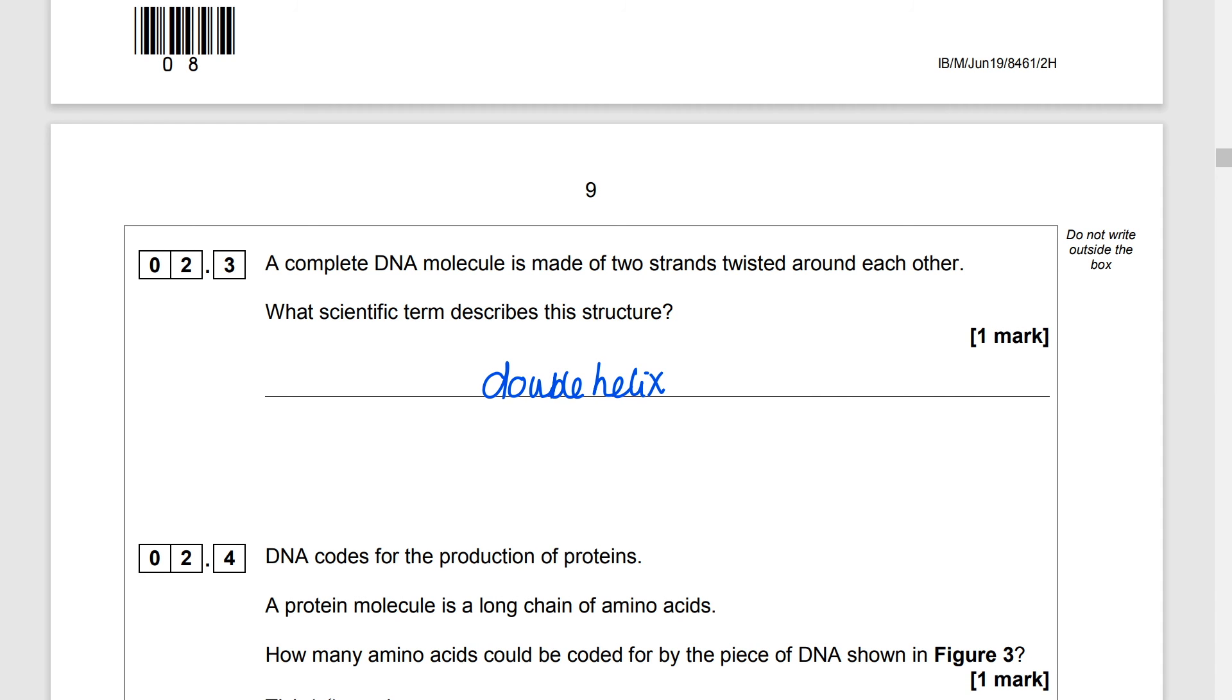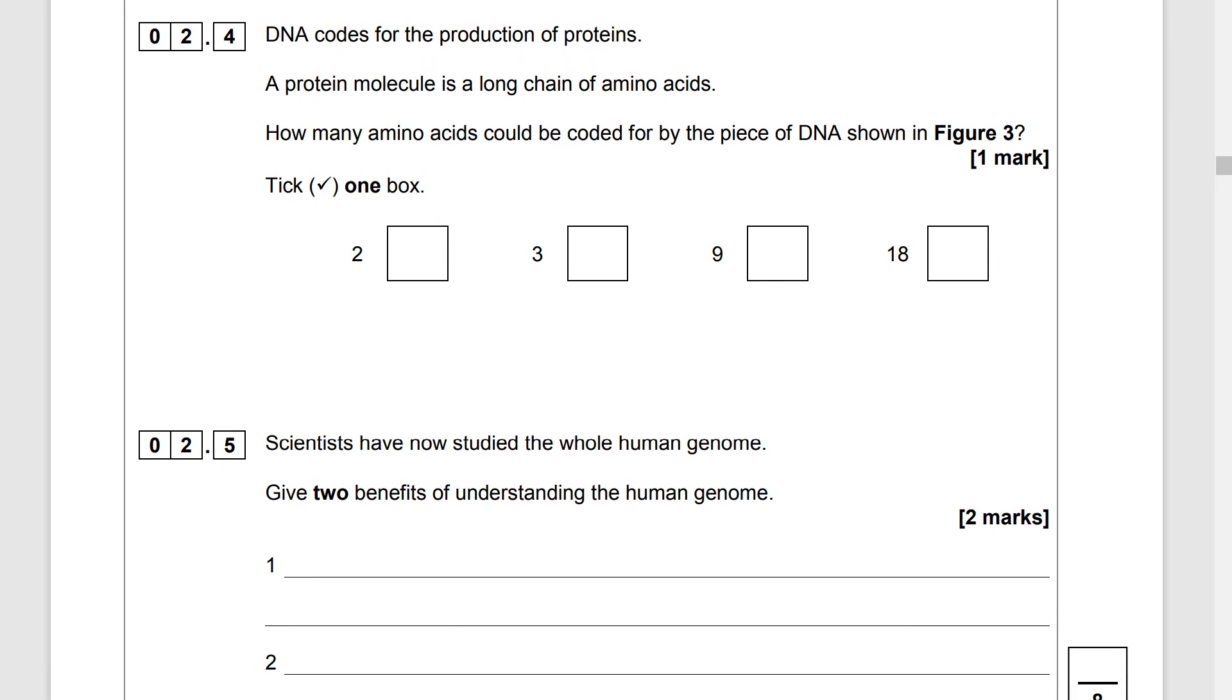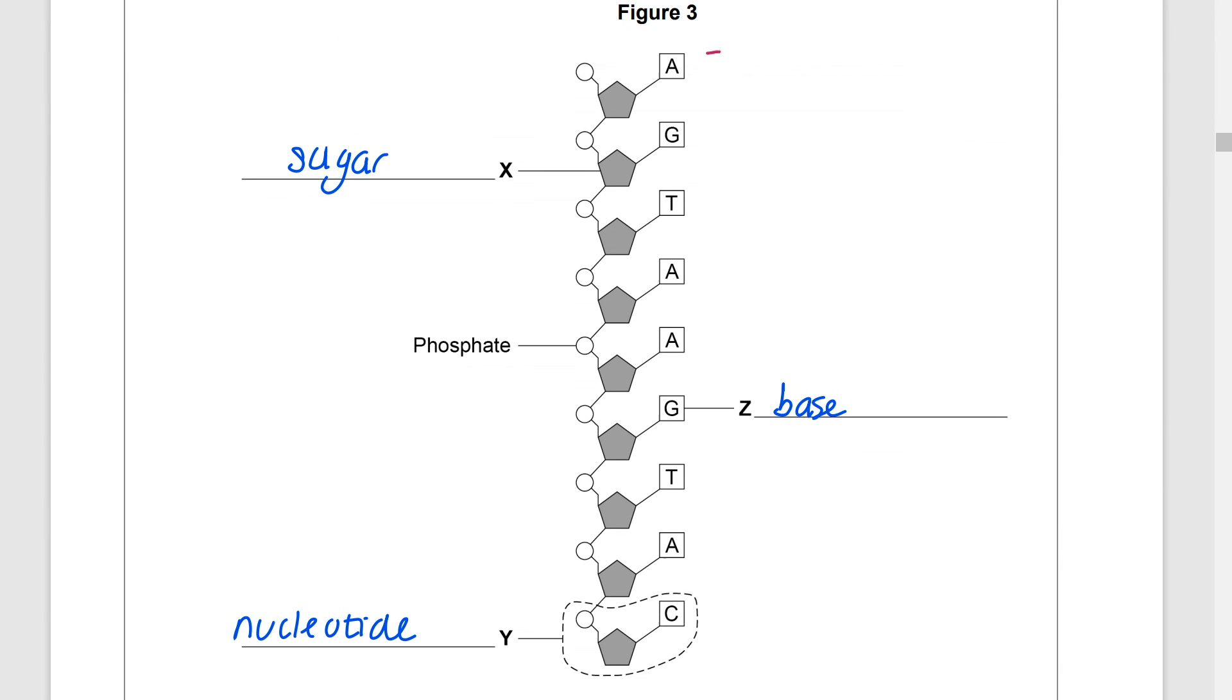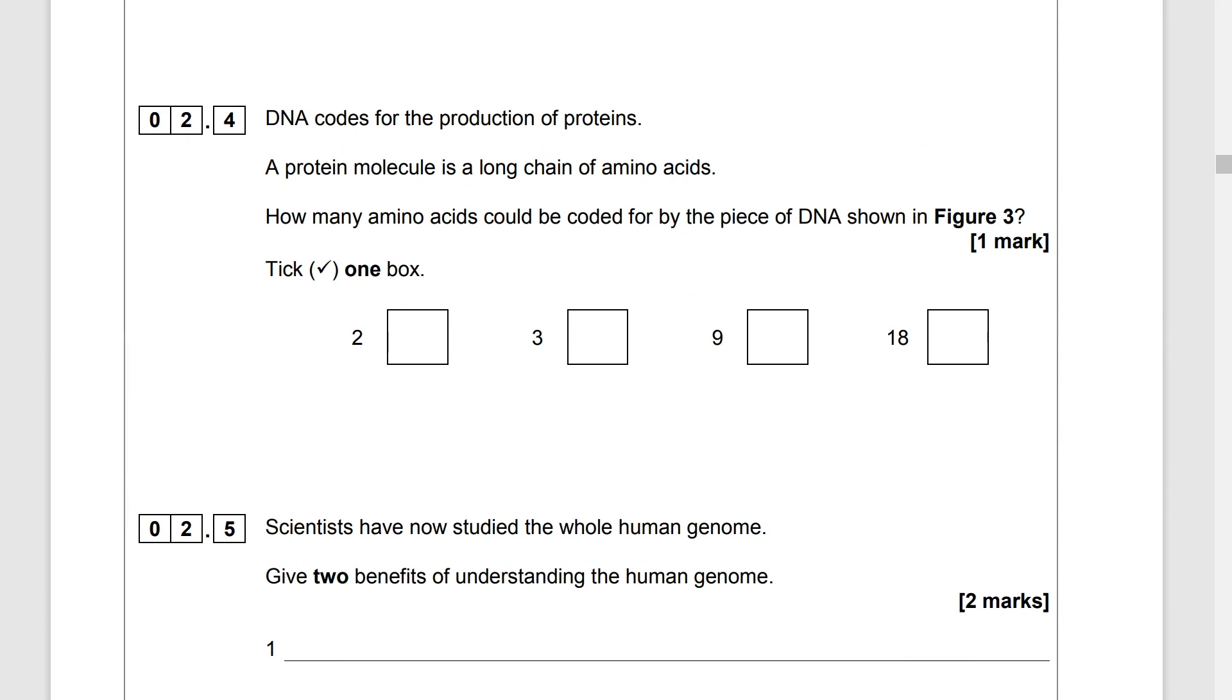DNA codes for the production of proteins a protein molecule is a long chain of amino acids how many amino acids could be coded for by the piece of DNA shown in figure 3. So if we look back at that DNA strand and remember that three bases can code for one amino acid so if we look at each triplet then there's a total of three triplets which means a total of three amino acids.